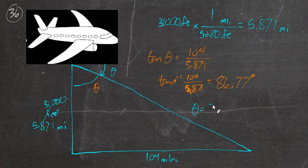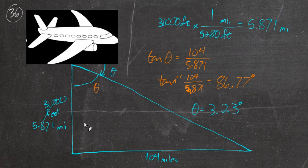So 90 minus that angle is 3.23. So 3.23 degrees. And that is it. Thanks again for watching, and I hope that was helpful.